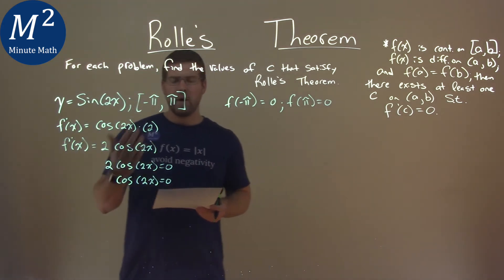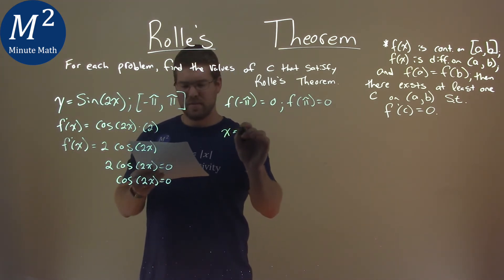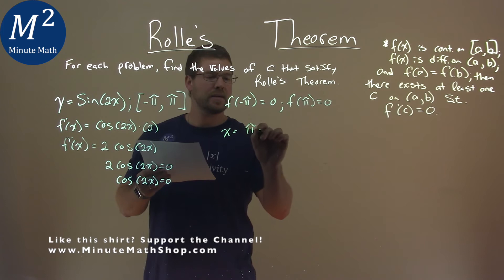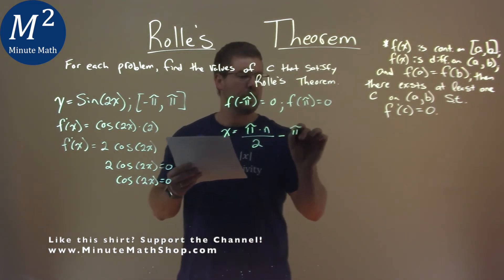Now, when does this happen? When does cosine of 2x equal zero? And that occurs when x is equal to pi times n over 2 minus pi over 4.